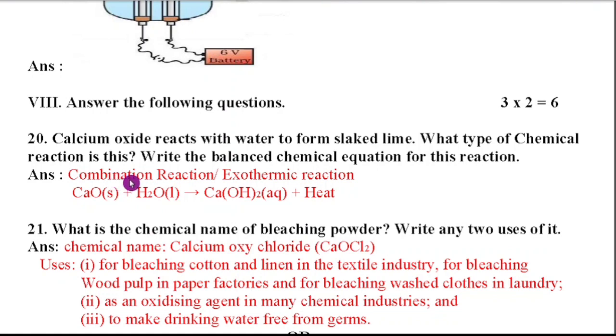So this is combination reaction or you can say exothermic reaction. Calcium oxide reacts with the water. When it reacts with the water, it forms slaked lime. So that chemical reaction is a combination reaction and along with that, it is one of the exothermic reaction because it is going to liberate heat. So here they asked balanced equation also. So calcium oxide plus H2O gives calcium hydroxide, Ca(OH)2 plus heat. So this is the balanced equation.